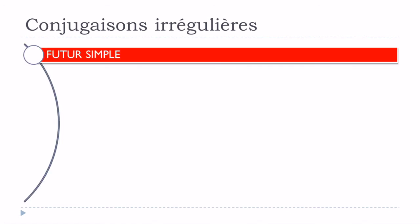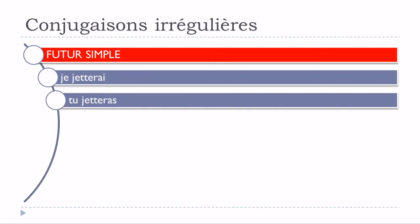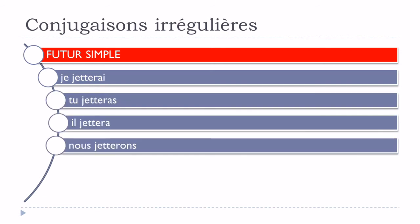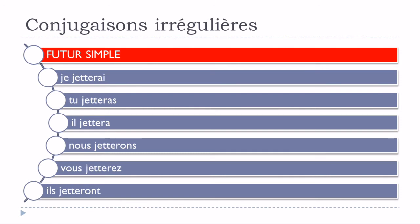Let's see now for le futur simple: je jetterai, tu jetteras, il jettera, nous jetterons, vous jetterez, ils jetteront. We can see that this modification will affect all the forms, and it's exactly the same modification as we did previously for the present form — you double this letter T: jetter-, jettera, jetterons, jetterez, jetteront.